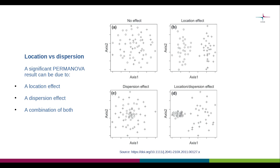The figure on this slide is lifted from a very useful publication by David Wharton and colleagues, published in 2011 in the journal Methods in Ecology and Evolution. This slide contains a link to that paper if you would like to read it. The figure illustrates four different location versus dispersion scenarios that we might encounter when running PERMANOVA.